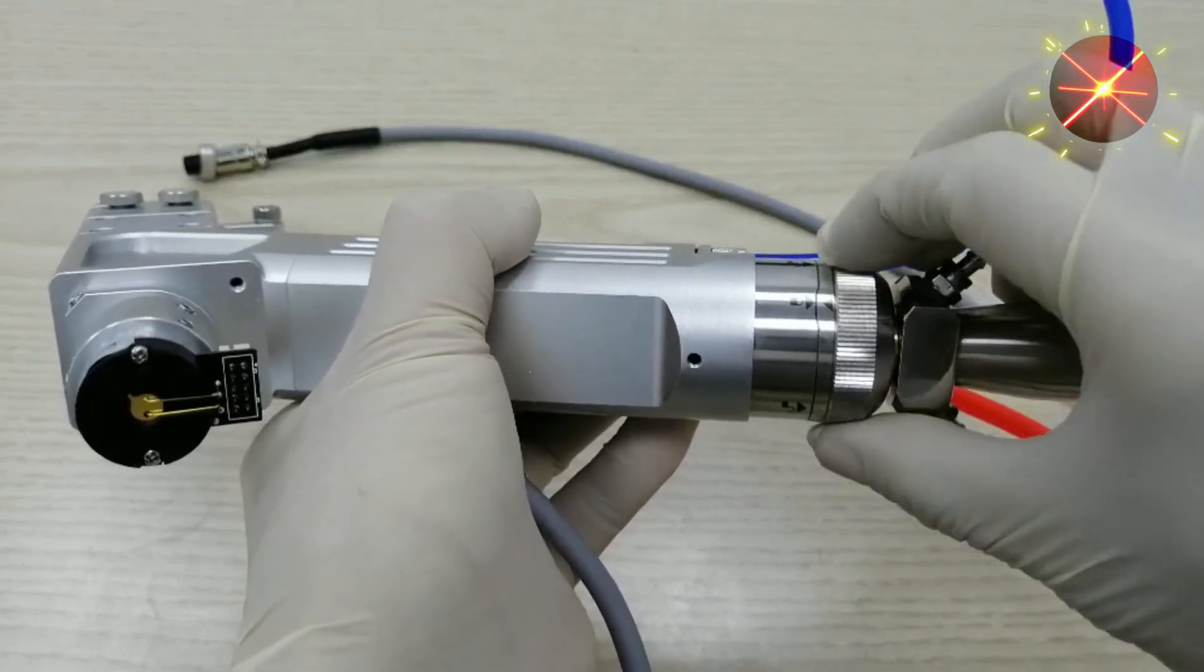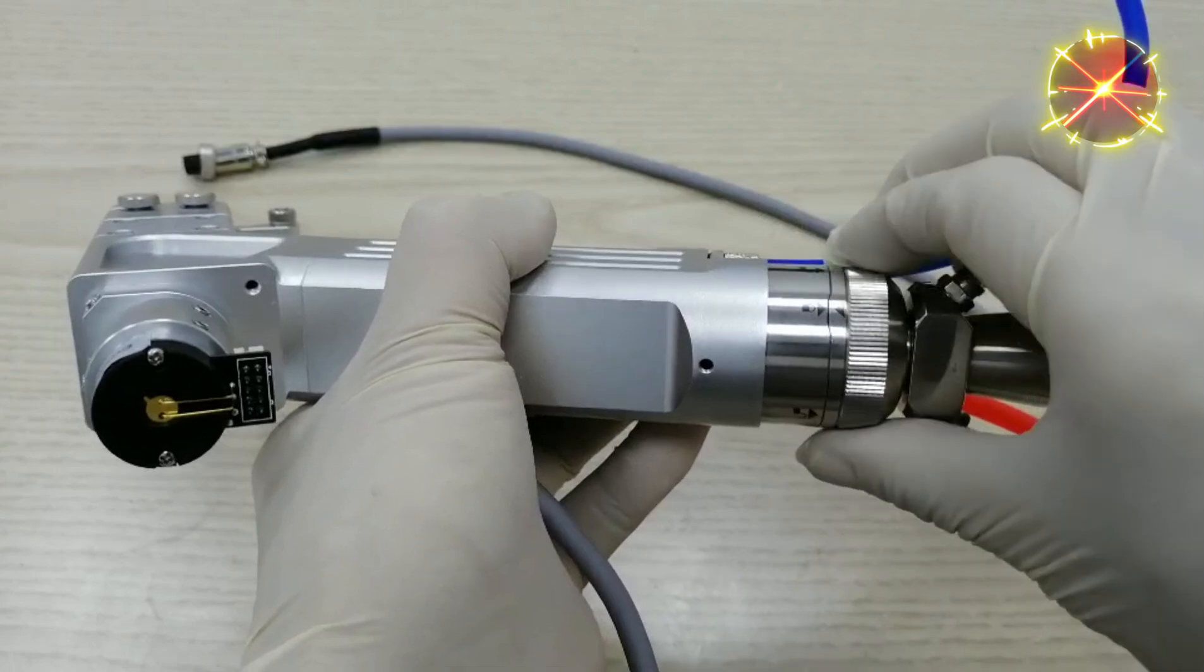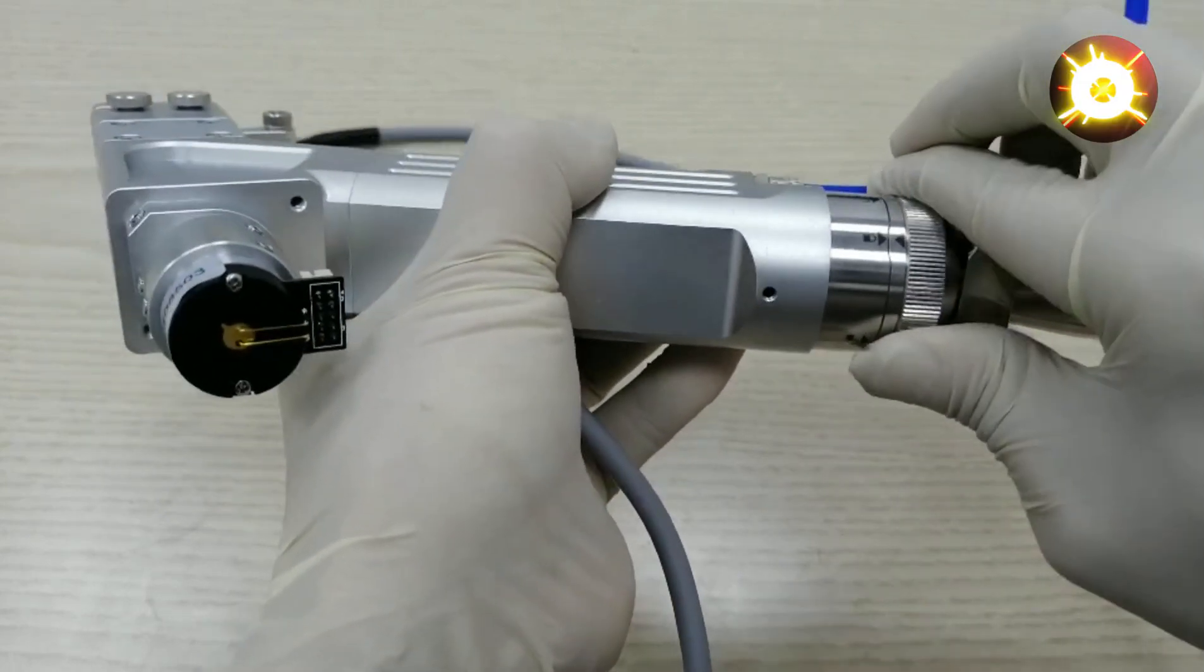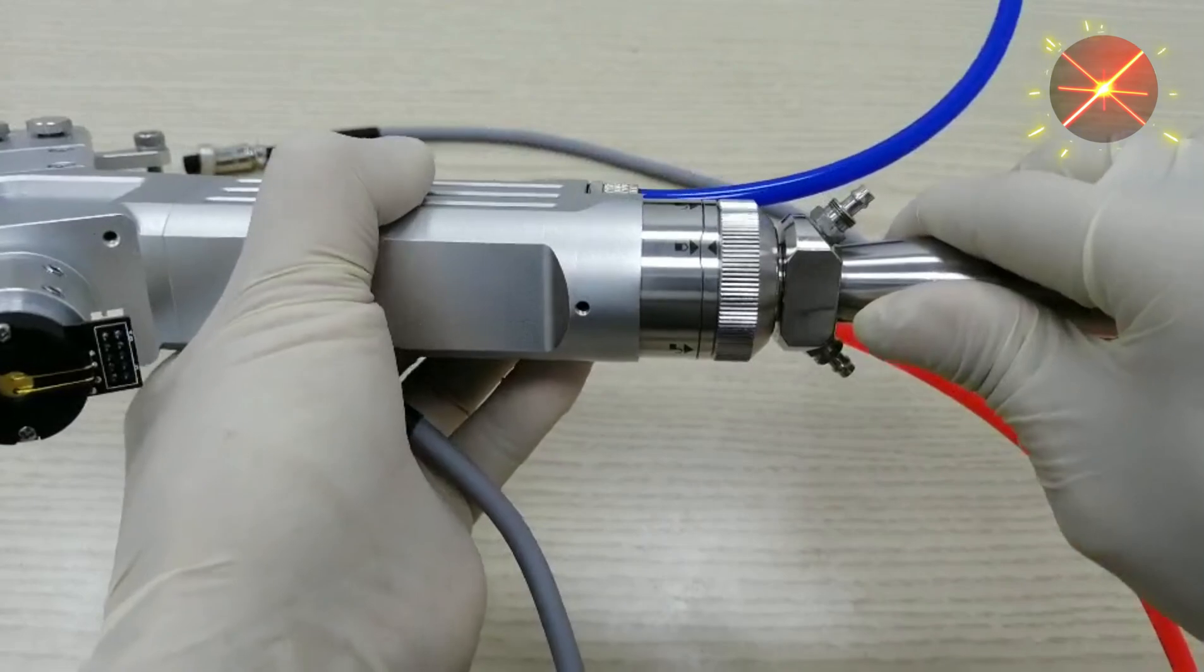Rotate the locking ring clockwise. The fibre is connected now.